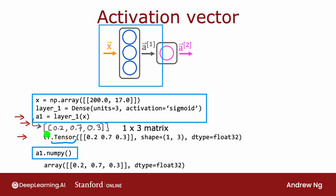And what is a tensor? A tensor here is a data type that the TensorFlow team had created in order to store and carry out computations on matrices efficiently. So whenever you see a tensor, just think of it as a matrix on these few slides. Technically, a tensor is a little bit more general than a matrix, but for the purposes of this course, think of a tensor as just a way of representing matrices.